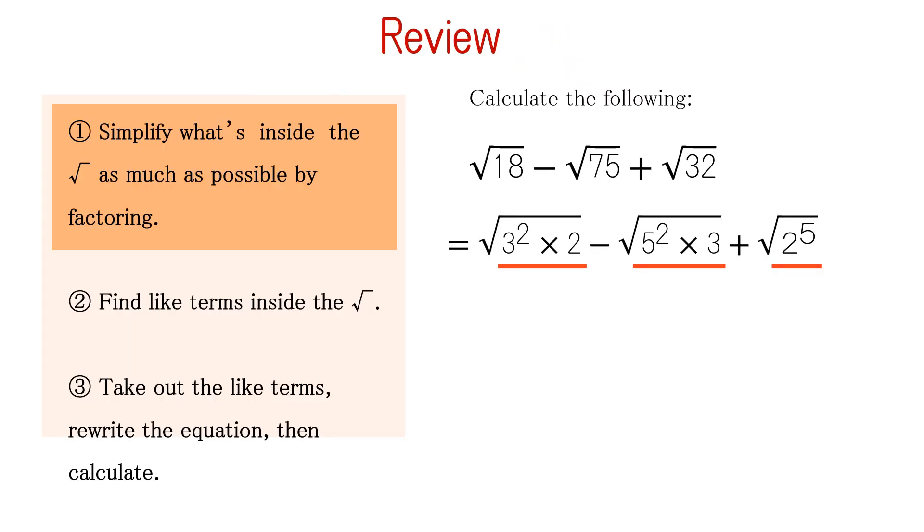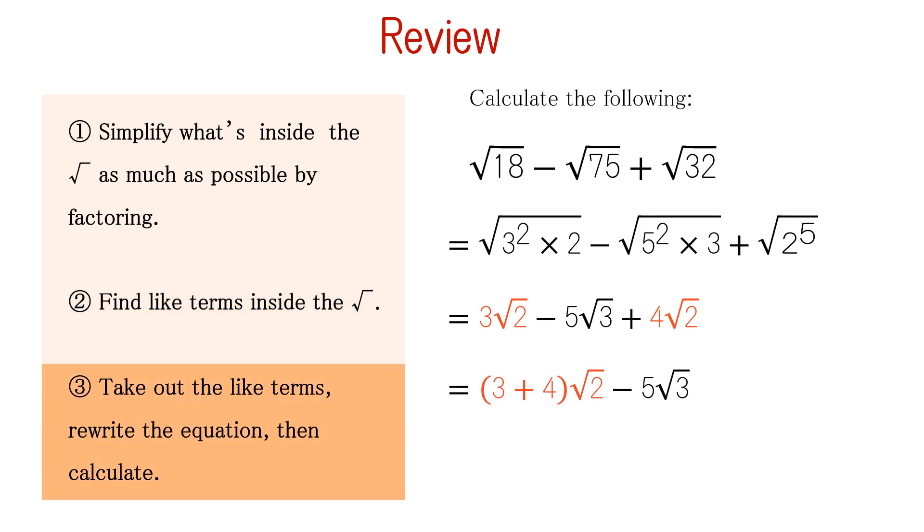Finally, let's review what we have learned. First, simplify what's inside the square root as much as possible by factoring. After that, find the like terms inside the square root. Take out the like terms, rewrite the equation, then calculate to get your answer.